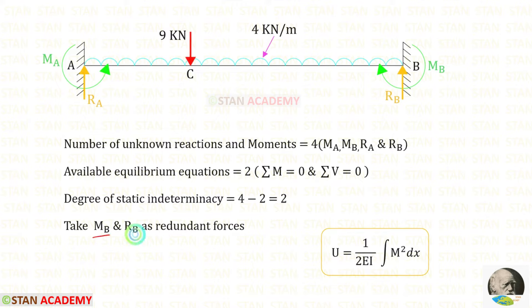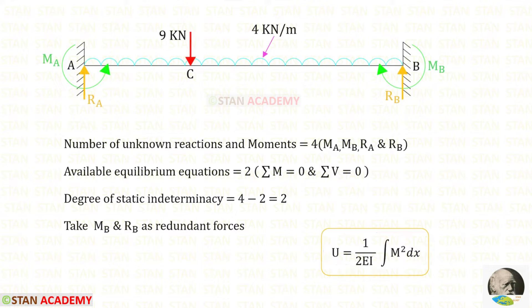To find the values of Mb and Rb we are going to use the strain energy formula: U equals 1 upon 2EI times the integration of M squared dx. To find the moment M we have to make sections in this beam. There are two different parts: AC and CB, so we have to make two sections, one in AC and one in CB.